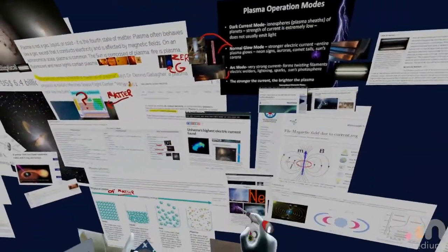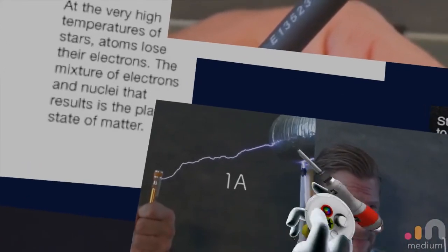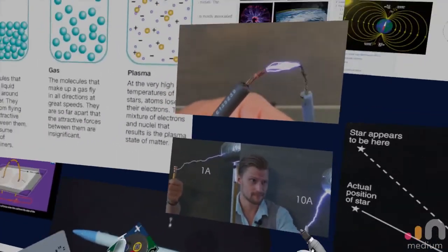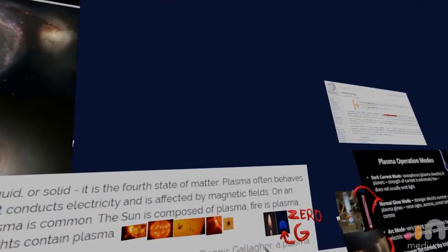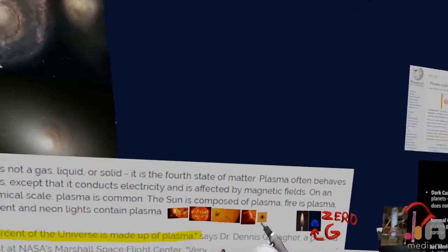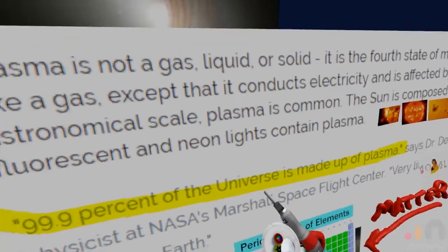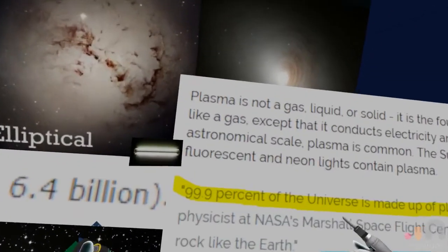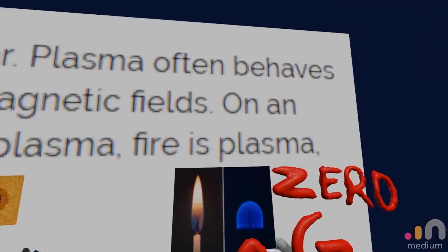And so I have just a couple pictures here. Electricity is plasma. It's an electrical state of matter. So there's one amp of current going through with a spark, and here's 10 amps of current. So you can see that it is visibly brighter. So plasma is not a gas, liquid, or solid. It is the fourth state of matter. It's the electrical state of matter. Plasma often behaves like a gas, except that it conducts electricity and is affected by magnetic fields. And plasma is common on the astronomical scale. I would say it's more than common as it's 99% of the universe. The vast majority.